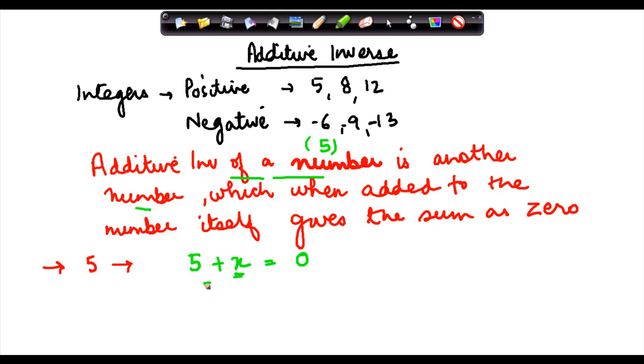To do this, I will subtract 5 from both sides. So 5 plus x minus 5 equals 0 minus 5. Here we get minus 5. This 5 cancels with this. So x equals minus 5. The Additive Inverse of 5 is minus 5.